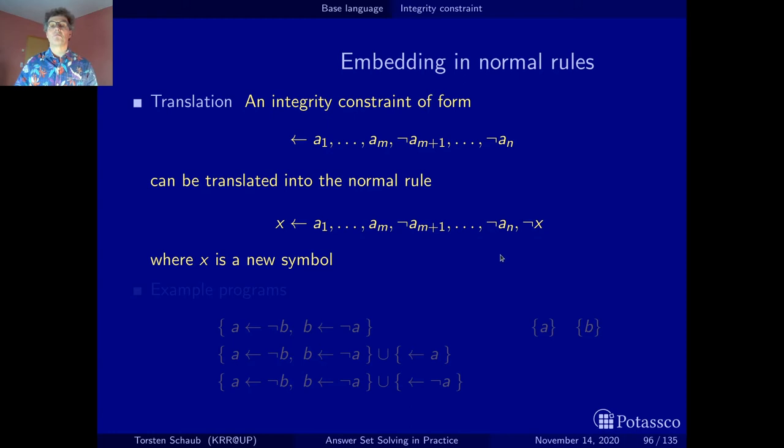The idea is, as long as the condition - the original condition from a₁ to aₙ - is not satisfied, the integrity constraint won't do anything because the rule somehow won't apply.